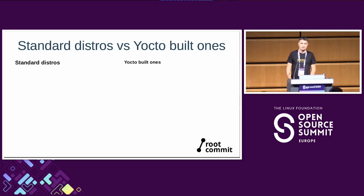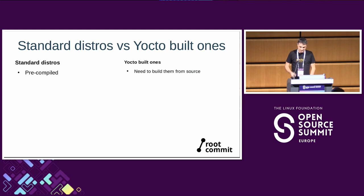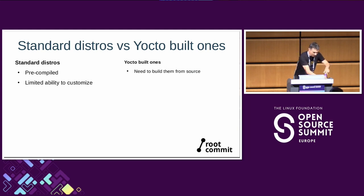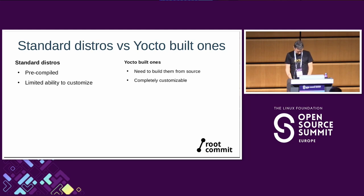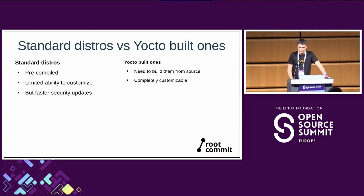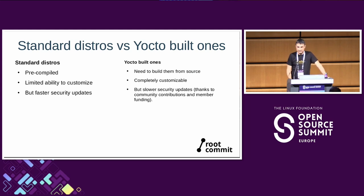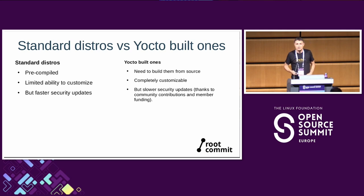Let's compare standard distros versus binary distros versus the ones Yocto can build. Standard distros are pre-compiled; with Yocto you build from source. Standard distros have limited customization ability, whereas with Yocto you can customize to any level you want. One advantage of standard distros is predictable security updates available within days of disclosure. With Yocto we don't have as many resources — sometimes it takes weeks before updates are released, and some CVEs take time to be resolved.